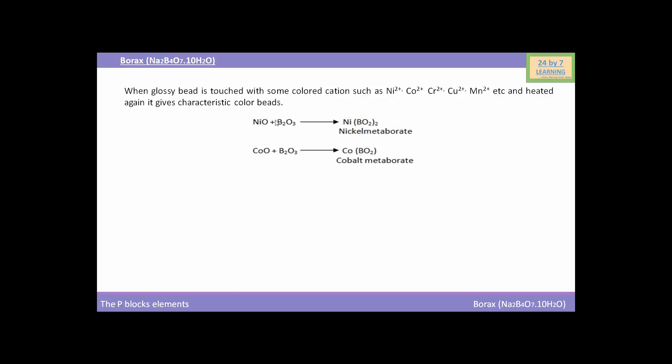You can see, nickel oxide when will react with B2O3, i.e. the glossy bead of anhydrous borate, then the reaction will yield NiBO2, i.e. nickel metaborate. And similarly, when cobalt oxide will react with this glossy bead B2O3, then the reaction will yield cobalt metaborate.